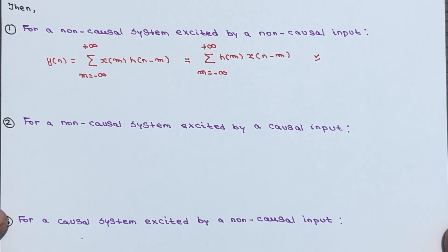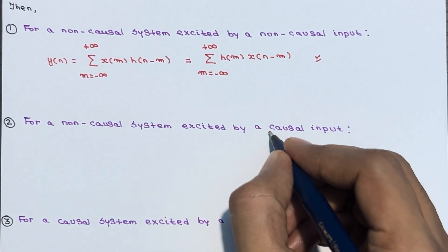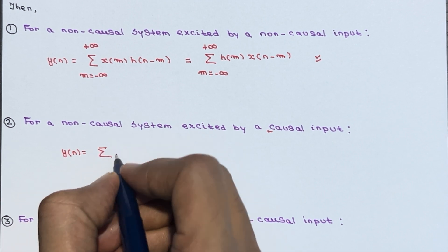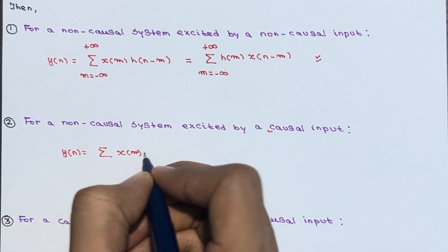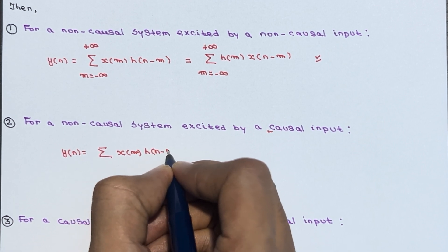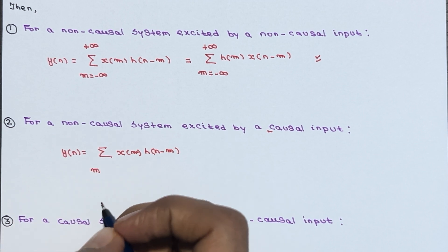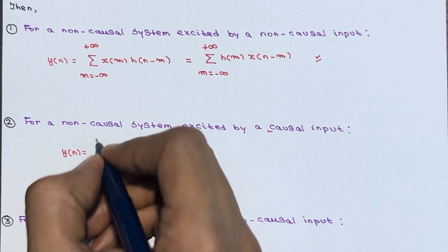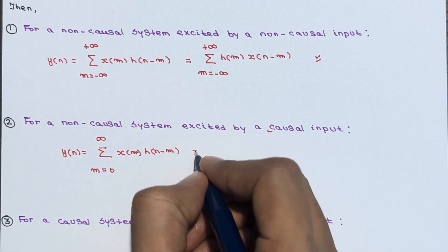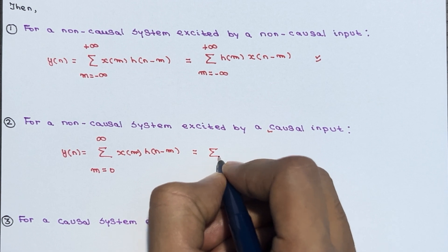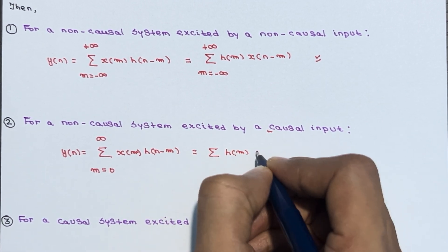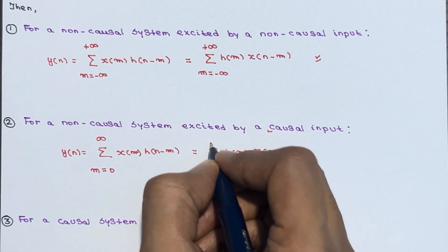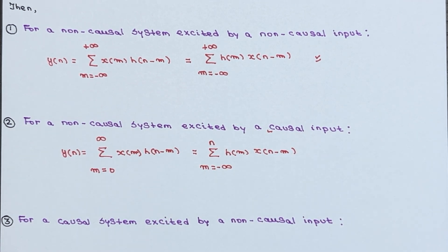For a non-causal system excited by a causal input, y(n) equals the summation of x(m) times h(n minus m), where m ranges from 0 to infinity. Equivalently, it can be written as summation of h(m) times x(n minus m), where m ranges from minus infinity to n.